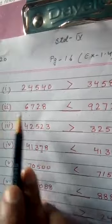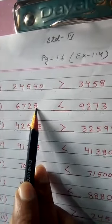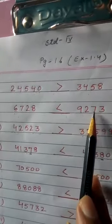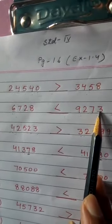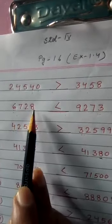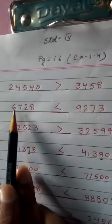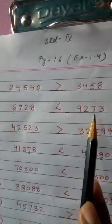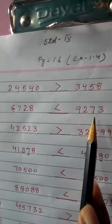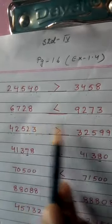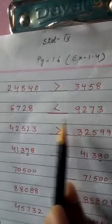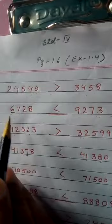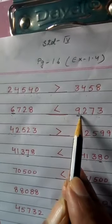Now see 1.2. The number is 6728 and here we are having 9273. Now we count the digits: 1, 2, 3, 4 — this is a 4-digit number. 1, 2, 3, 4 — this is also a 4-digit number. Both are 4-digit numbers. Now we will compare. This is 6 and this is 9, so 9 is greater.